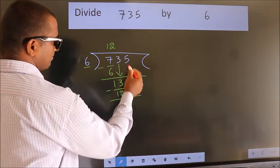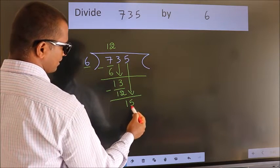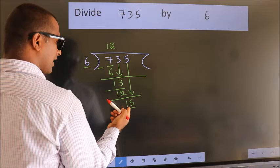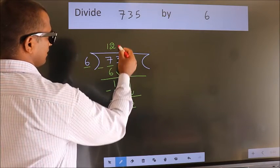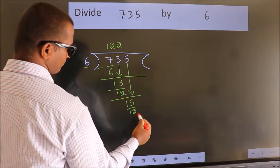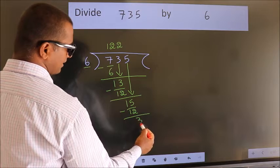After this, bring down the next number. So 5 comes down. So 15. A number close to 15 in the 6 table is 6 times 2, which is 12. Now we subtract. We get 3.